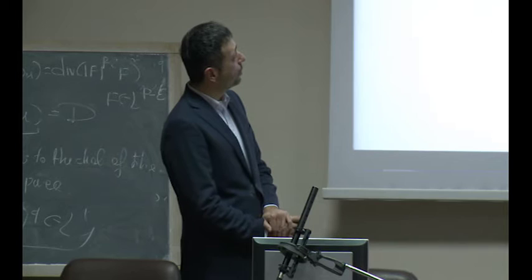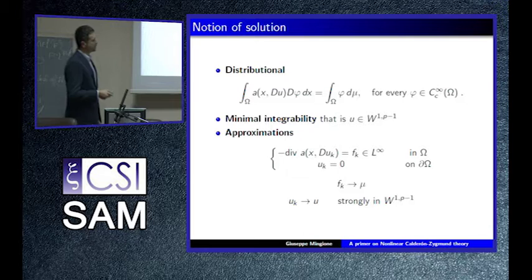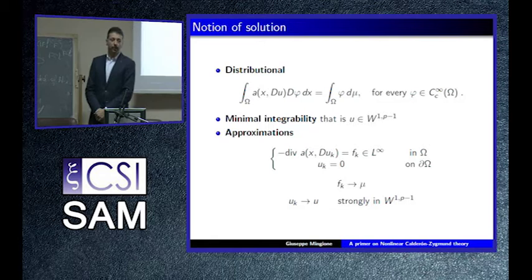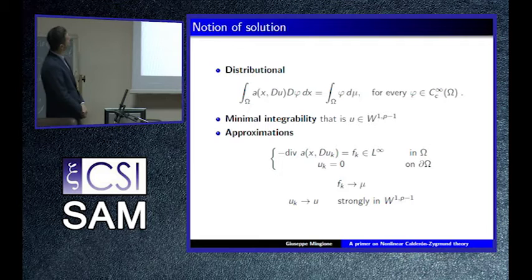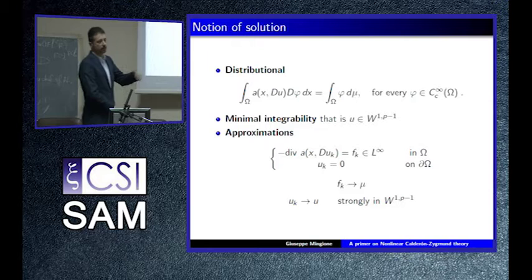All these definitions are equally good, so we'll take solutions obtained by limiting approximations because they are at least easy to describe. What you do: you take mu, approximate it in a smooth way or in an L-infinity way, solve these approximating problems — now the right-hand side is in the dual — and then Boccardo and Gallouët prove that the u_k are strongly converging in W^{1,P-1}, and the limit is the so-called solution obtained by limiting approximation, with the acronym SOLA.